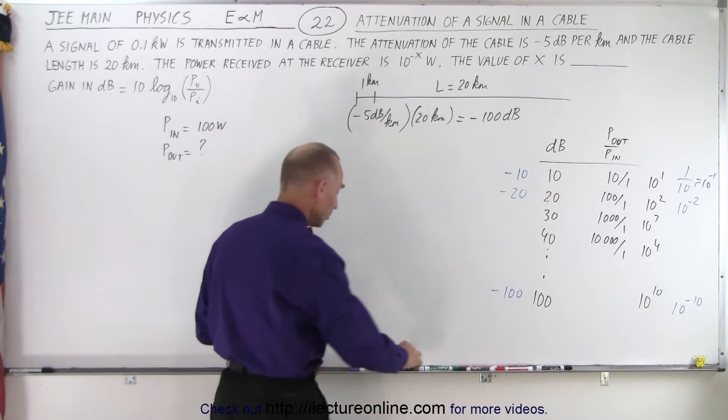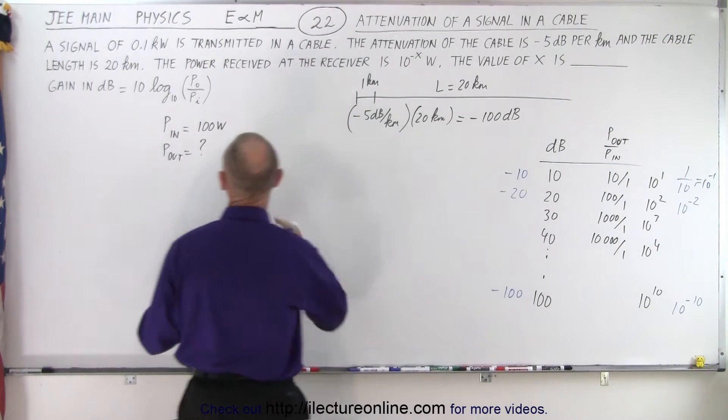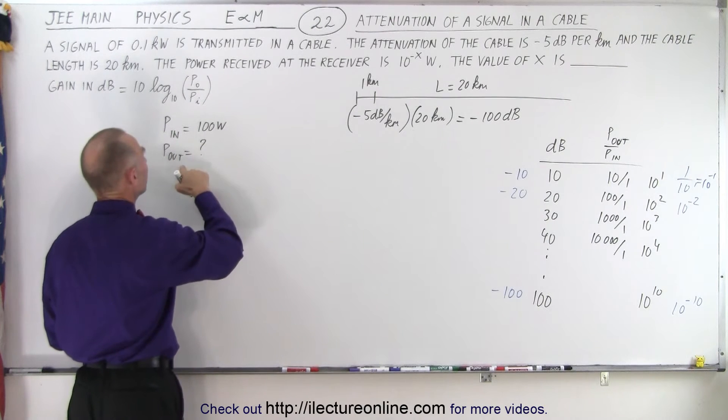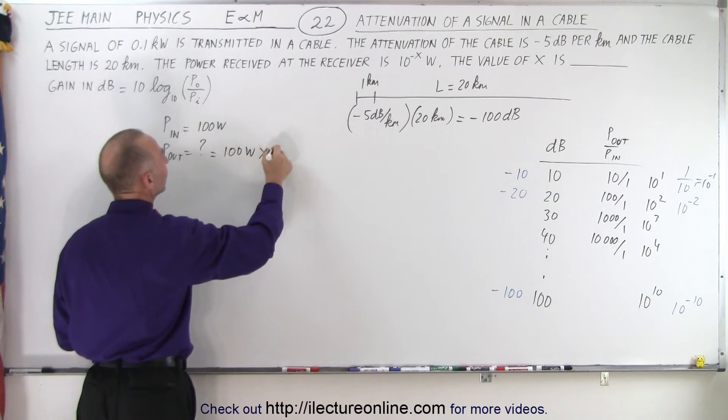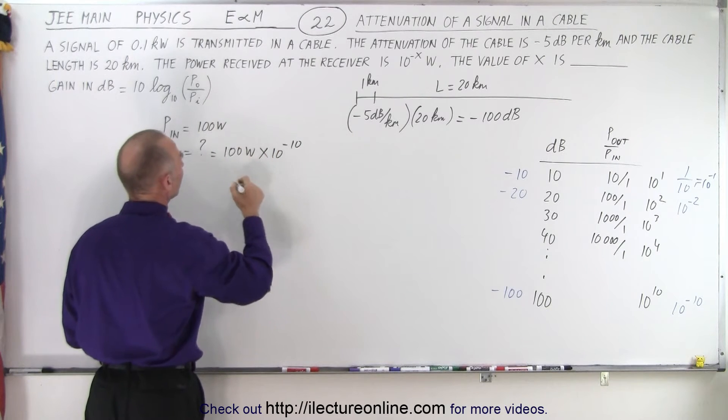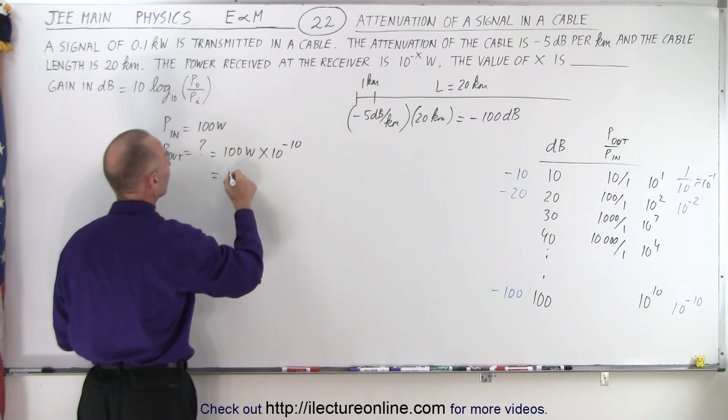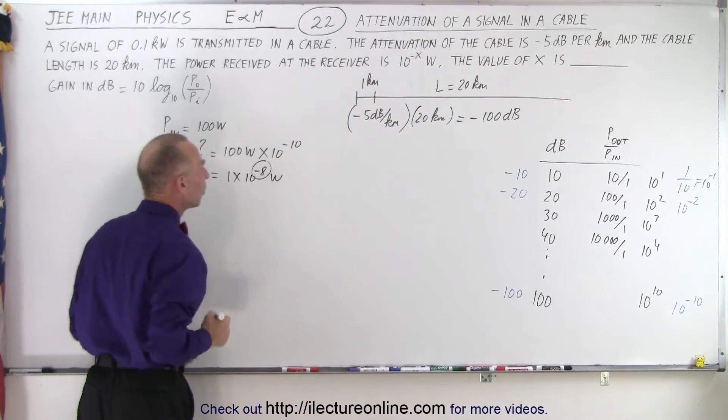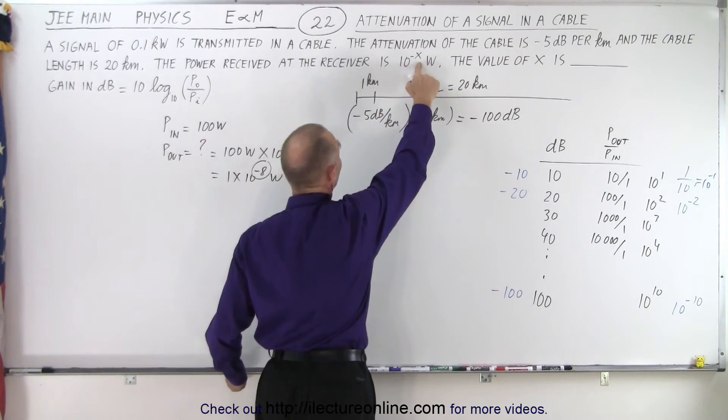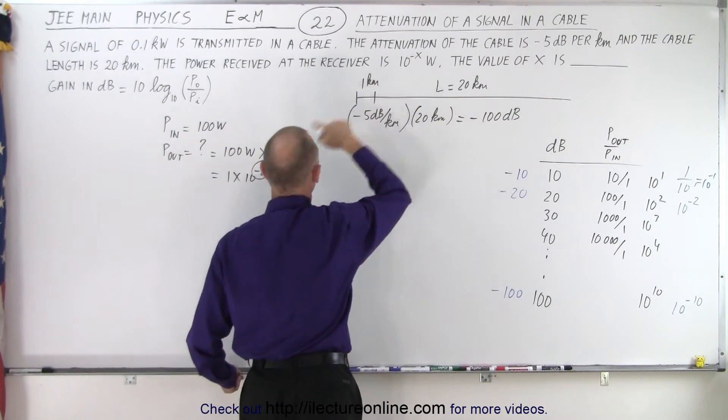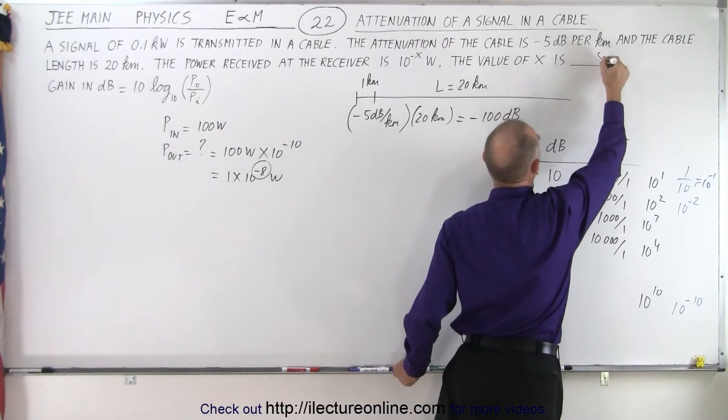Once you see that, then you realize that if P_in is 100 watts, then P_out would be 100 watts times 10^(-10) which equals 1 times 10^(-8) watts. Therefore we have the exponent of -8, we're looking for the value of x, so x in this case equals 8.